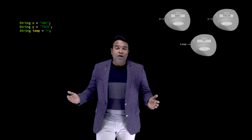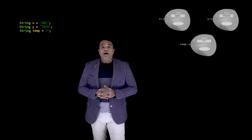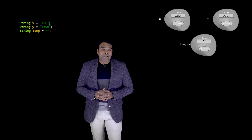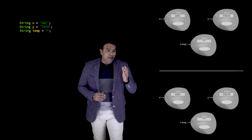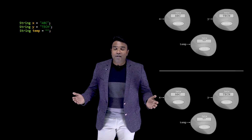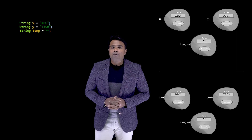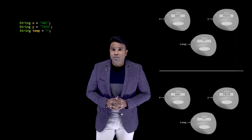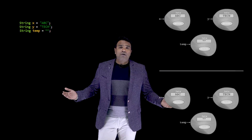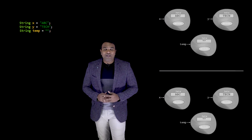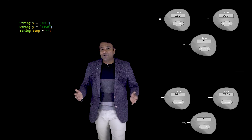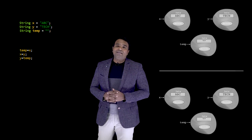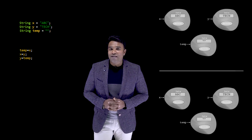I need to swap the strings 'abc' and 'tech'. Even before I swap, I don't want to alter how things appear, so I take a copy. Here is where I demonstrate exactly how the swapping happens. These are the three lines of code which will help you swap.